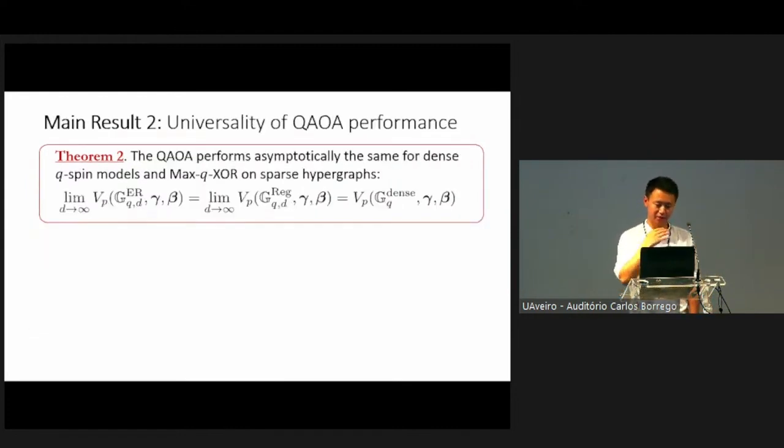Now, given that we have this nice formalism to compute the expected energy of many general ensembles of COPs, we also discovered a second result, which is that the performance of the QAOA exhibits a universality type property. What I mean by that is that if you look at random dense Q-spin models with Gaussian couplings, and you can also look at the QAOA on sparse problems, like Max-Q-XOR, it turns out that you can think of them as instances where the Js are drawn from different random distributions. But it turns out that in some asymptotic limit, as long as the first and second moment agrees between these random distributions, the QAOA's performance on these problems also agree asymptotically.